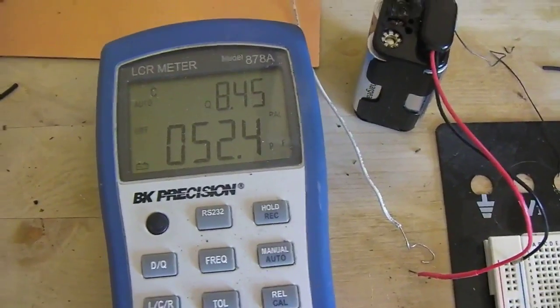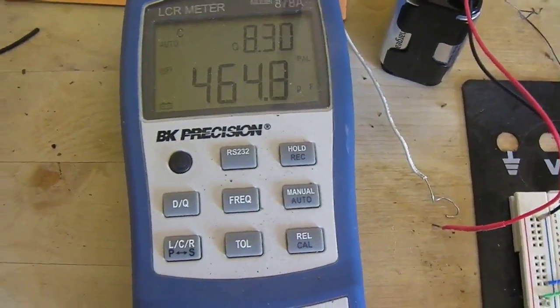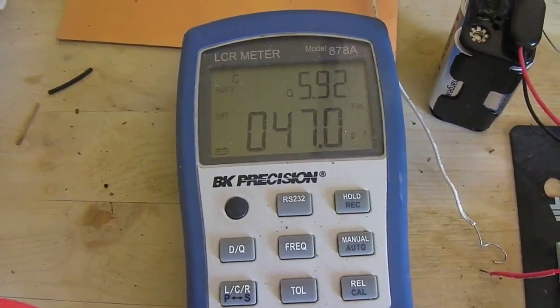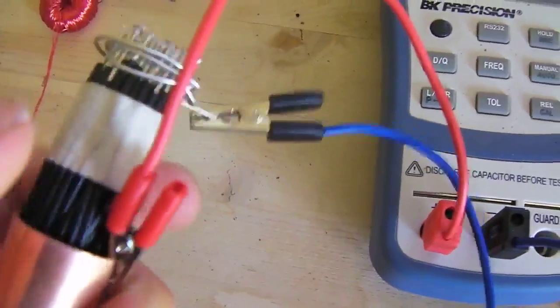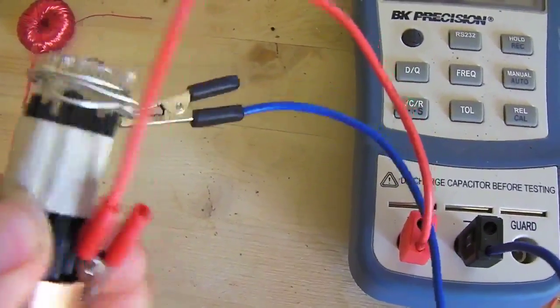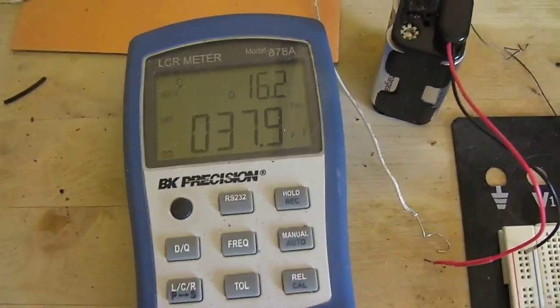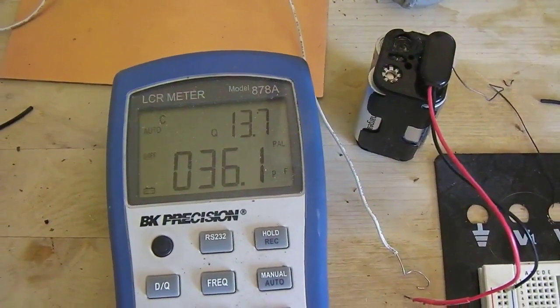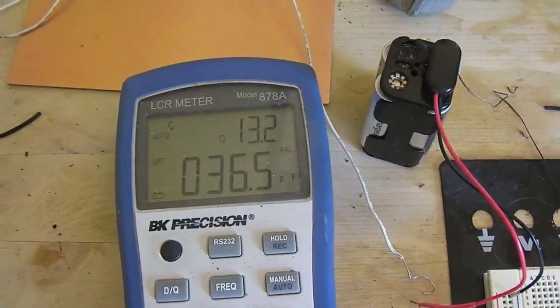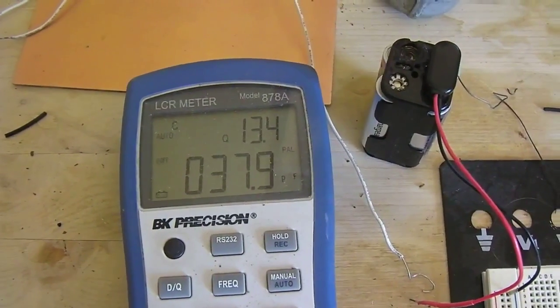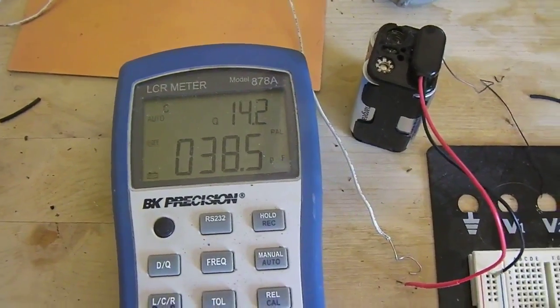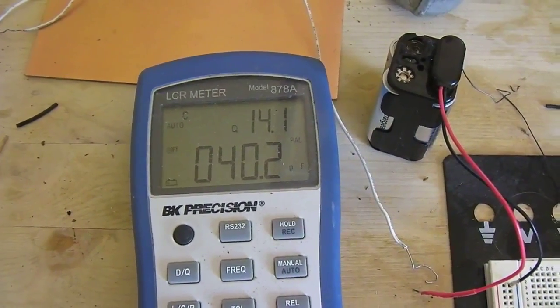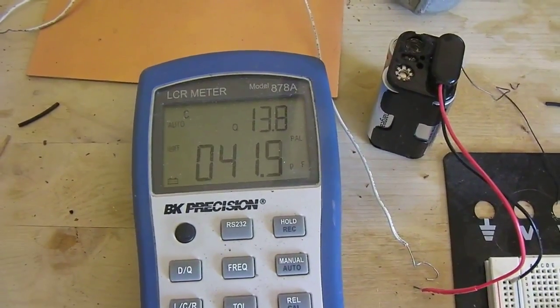When I touch it the capacitance jumps way up, but if I just pull it out here a little, it really does have very good resolution to make very precise changes. I'm holding the masking tape while I'm moving it so that it doesn't jump around.